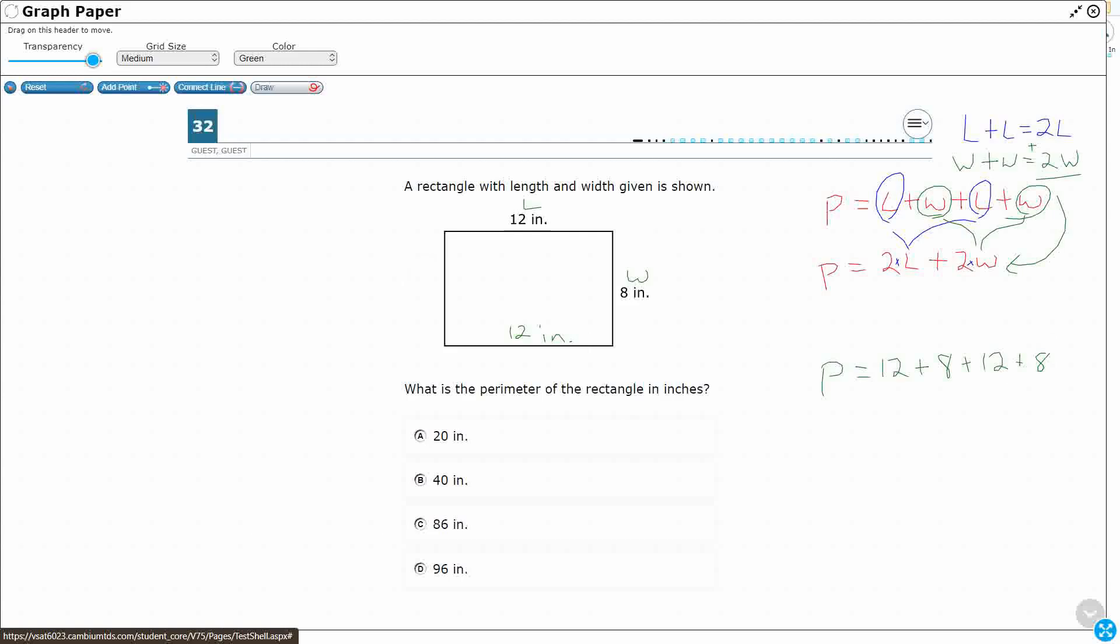So let's see. If we add these two up right here, look, that's 8 and 12 is 20. That's 20. So P equals 20 plus 20, which is 40. Alright, so we're looking at 40, which is B.